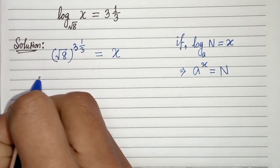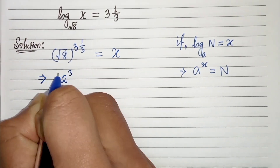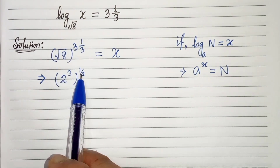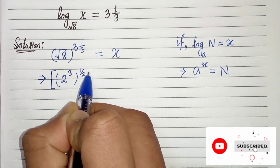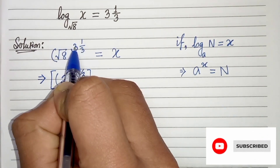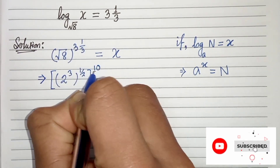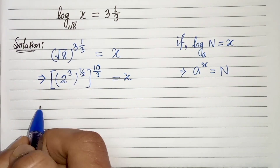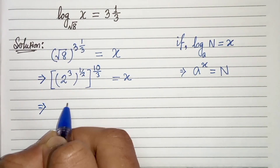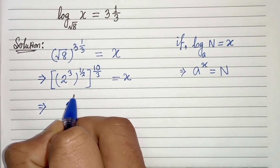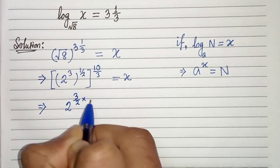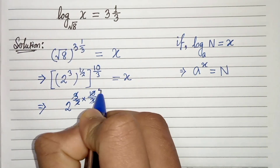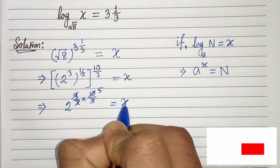Now let us simplify this. We can write 8 as 2 cubed, and root is power half, whole to the power — 3 and one third is 9 plus 1, which is 10 divided by 3 — equals to x. In the next step we can write 2 to the power 3 over 2 times 10 over 3. The 3s get cancelled and here we get 2 to the power 5 equals x.